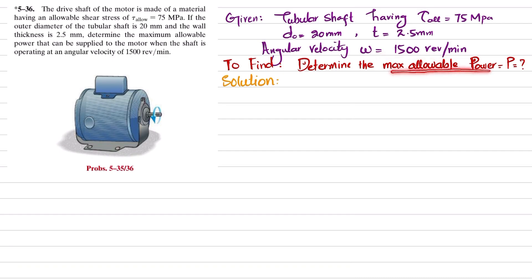Let's start with the solution. As we know, power is equal to torque multiplied by angular velocity. So we will find the torque, where torque T equals P divided by omega (angular velocity).